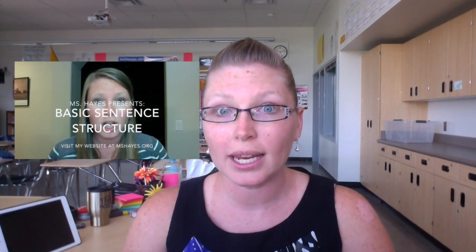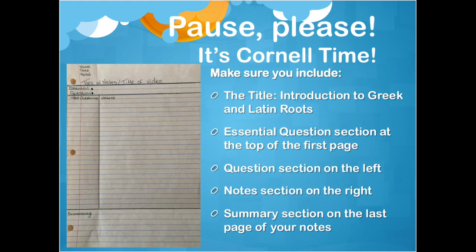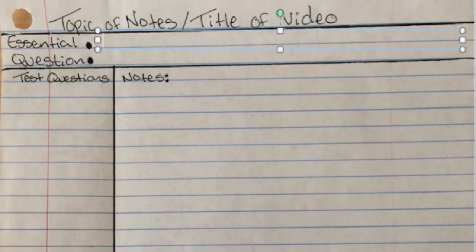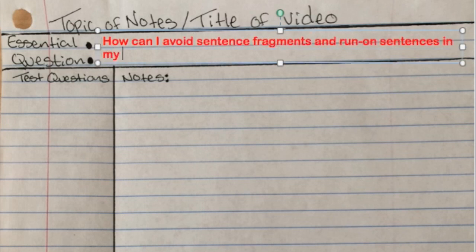Before we get started, make sure you are adding on to your notes from sentence structure part one. And if you have filled up your notes completely, then you may want to just pull out another sheet of notebook paper and start up new Cornell notes. Your essential question for this video is the same: how can I avoid run-on sentences and sentence fragments in my writing?